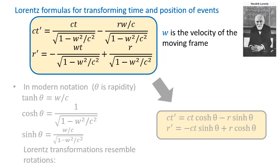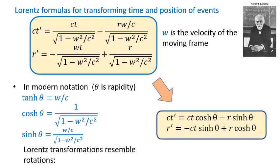These formulas were invented by Hendrik Lorentz at the end of 19th century, and they became an integral part of Einstein's theory of relativity. For an observer moving with velocity W, the primed coordinates of the event CT' and R' are linear functions of the coordinates CT and R measured by the observer at rest. It is more convenient to simplify these formulas by introducing the so-called rapidity θ, whose hyperbolic tangent is equal to the ratio W over C.